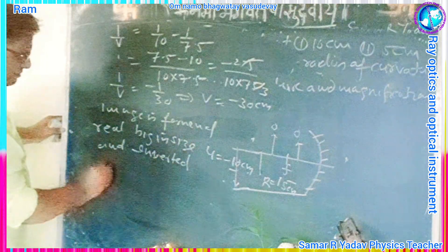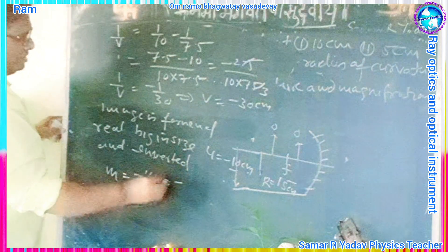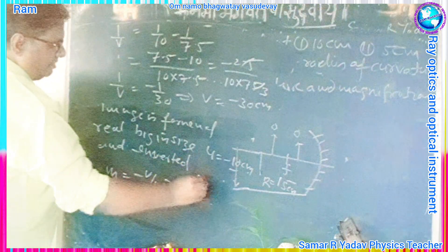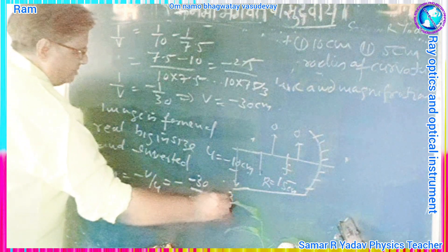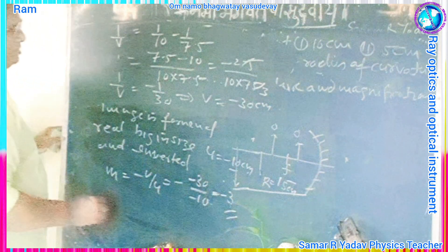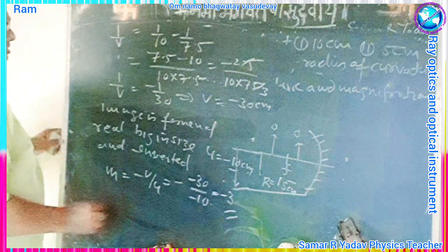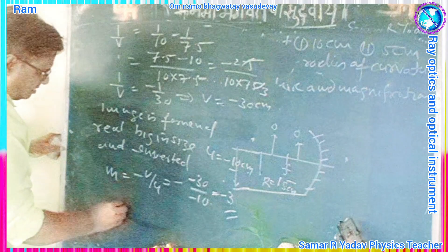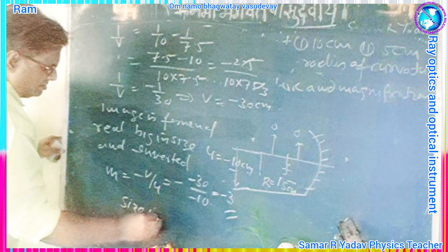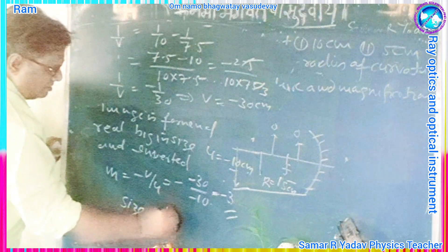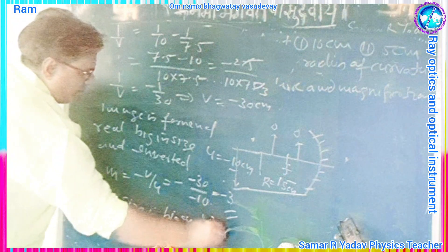Now we will get the magnification. M is equal to minus V upon U, equal to minus of minus 30 divided by minus 10, equal to minus 3. So the image is big in size, 3 times bigger, and it is real and inverted.